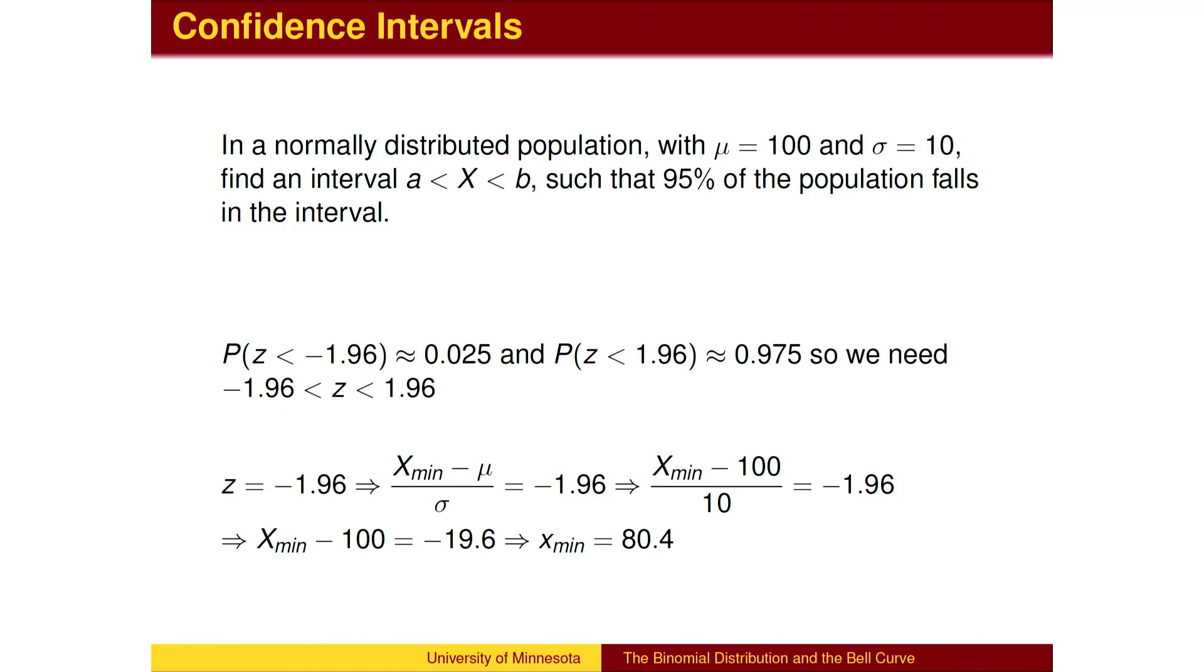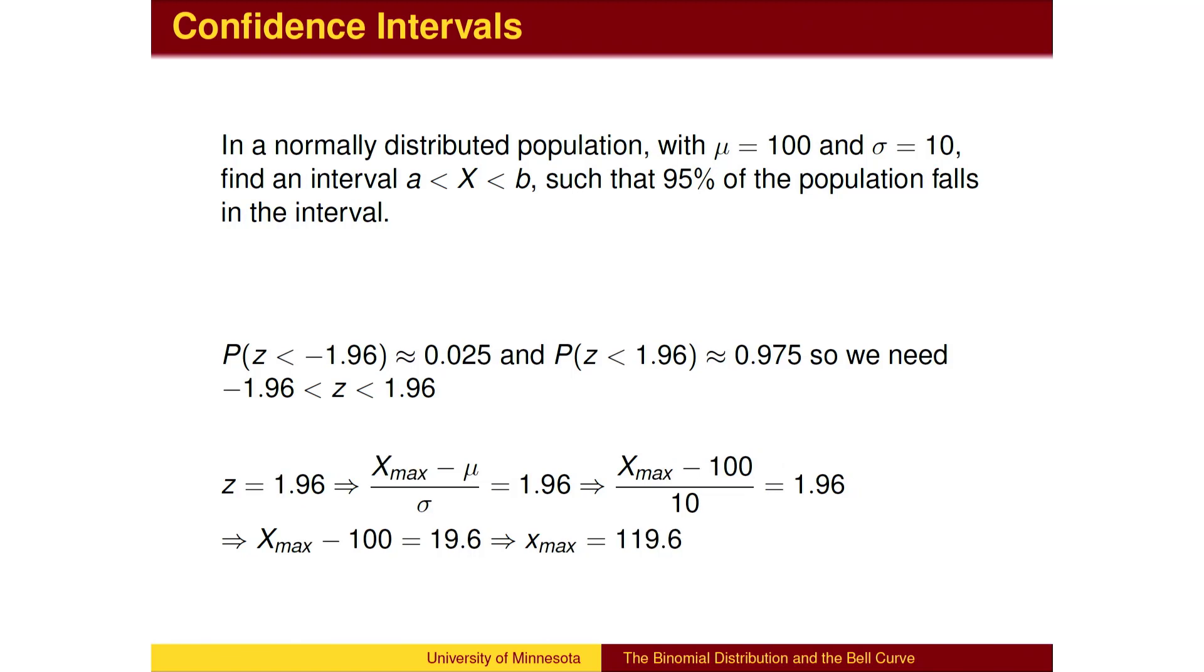We need to convert that z-score back to the actual values. The lower bound should be 1.96 standard deviations below average, which would be at 80.4. The upper bound should be 1.96 standard deviations above average, which would be at 119.6.